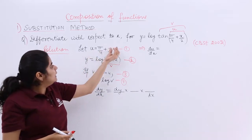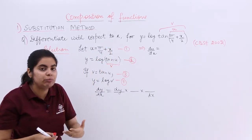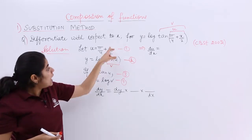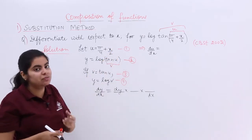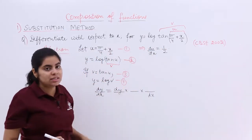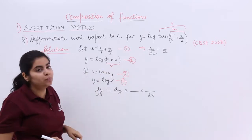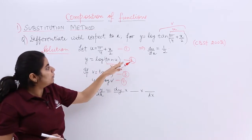Now, du by dx means what? Pi by 4 is a constant when seen in respect to x. x by 2 means differentiate with respect to x. So it becomes 1 by 2. That is one answer. Next is what? y and u into picture from here. But that is solved.